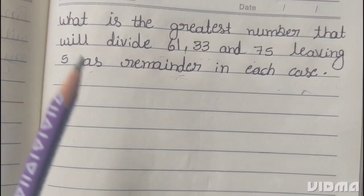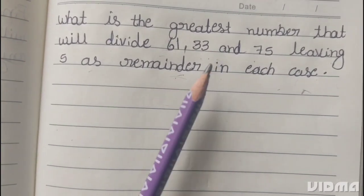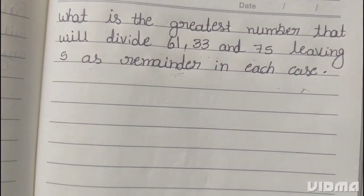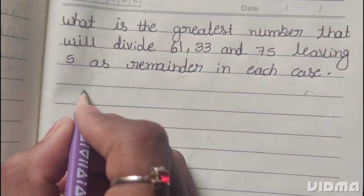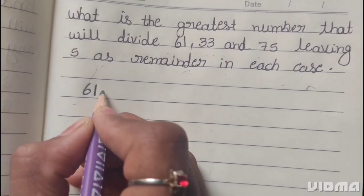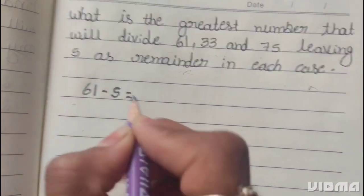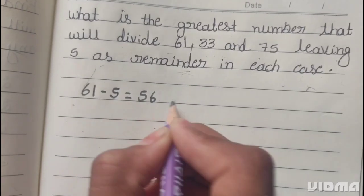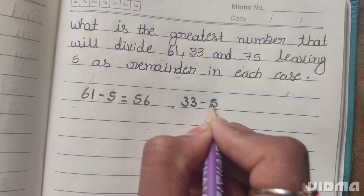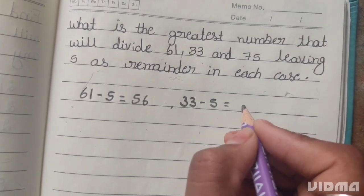The required number will divide 61, 33 and 75, leaving 5 as remainder. 61 subtract 5 equals 56, 33 subtract 5 equals 28,